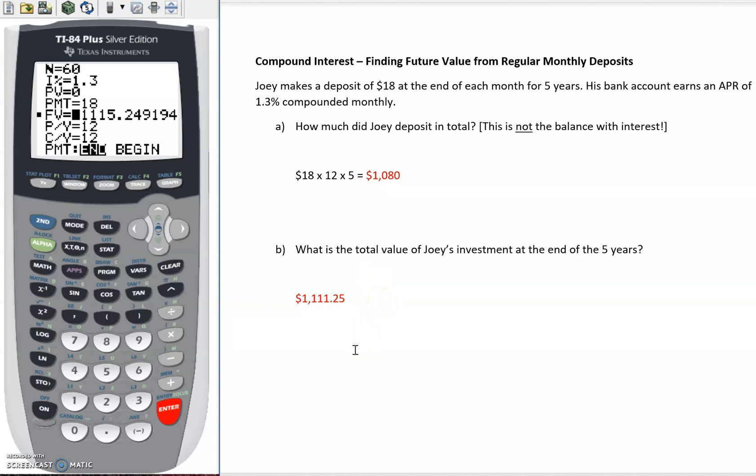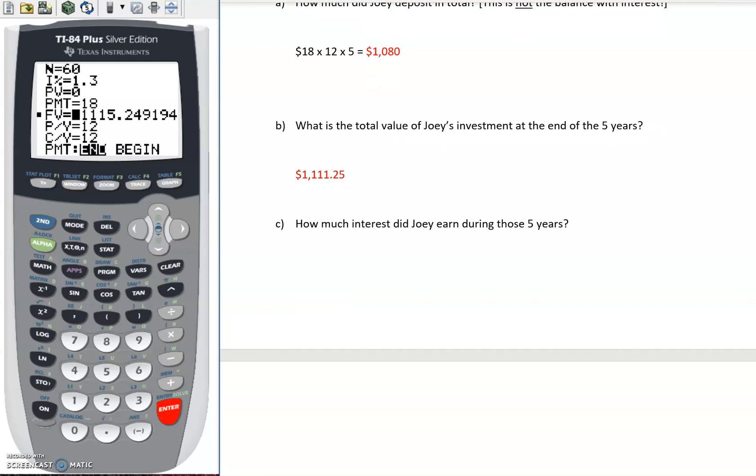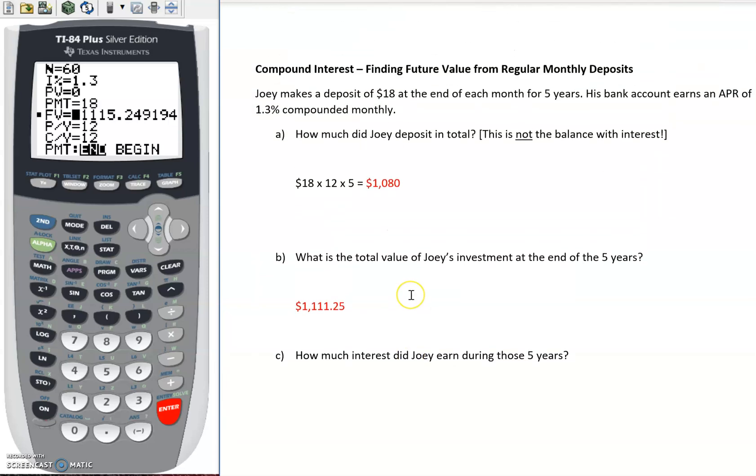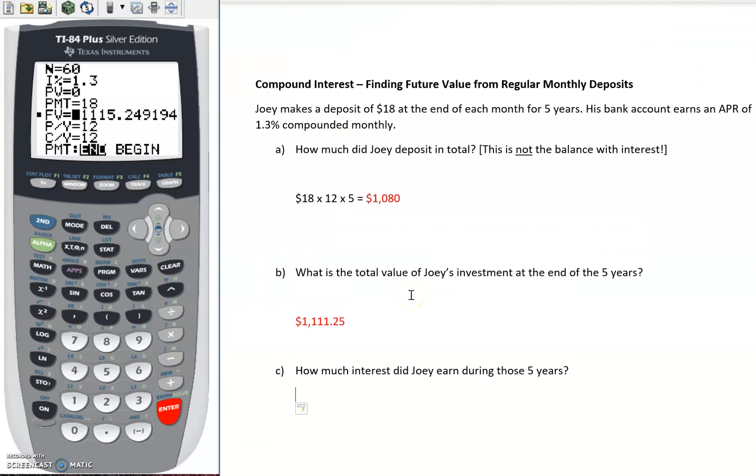So we could ask a Part C to this: how much interest did Joey earn during those five years? And we could just subtract those two values. If I take that value $1,115.25 and I subtract $1,080, then we get $35.25 that was earned in interest.